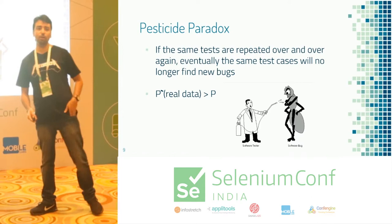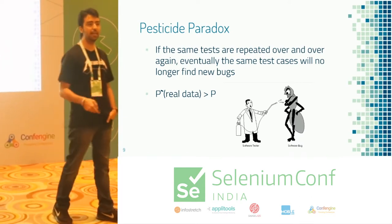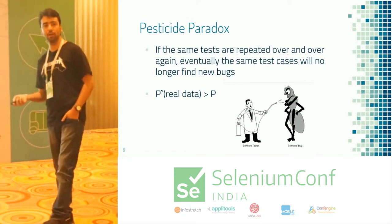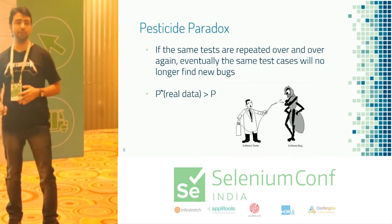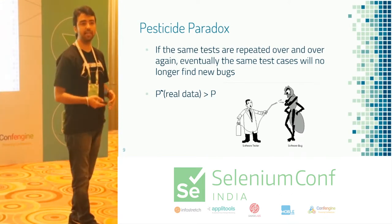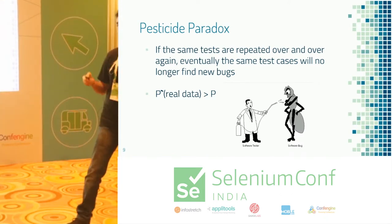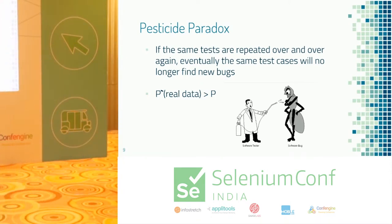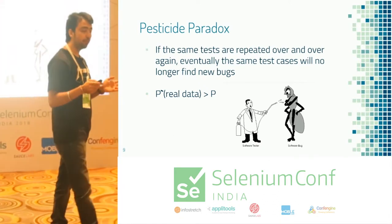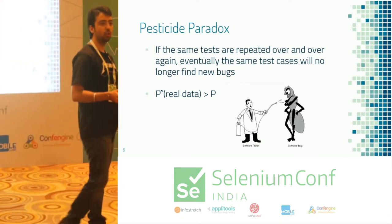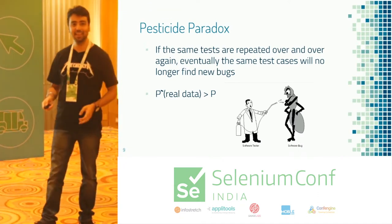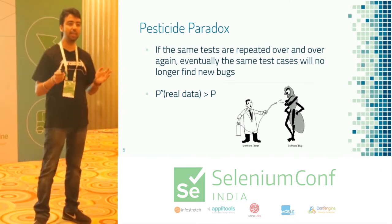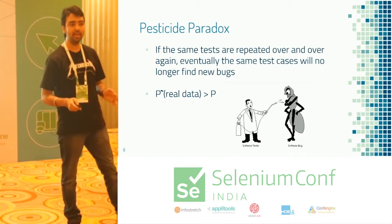It's a very common principle: when you're running your tests repeatedly over and over again — say you have 4,000 test cases taking 8 hours to run — are they finding any new defects every time, or are you just maintaining them? It's like a pesticide paradox. You're giving them the same set of inputs and getting the same set of outputs, but no net new bugs found. But when you use real data, not just mock data, the probability of finding defects increases.